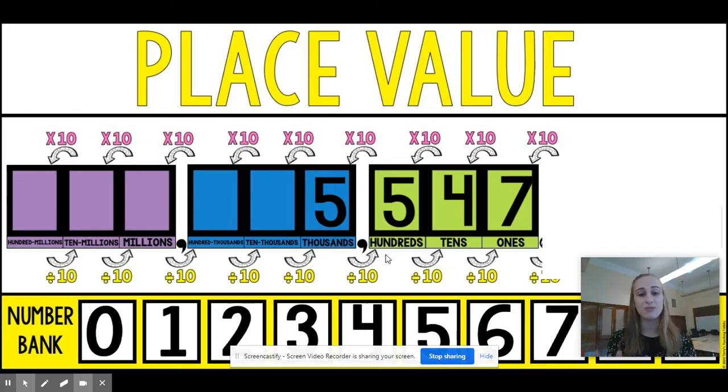We have to think about the value of those numbers. So the five in the thousands place, the blue box, is worth 5,000. That's its value. In the green box, the five is in the hundreds place, so it's worth 500.